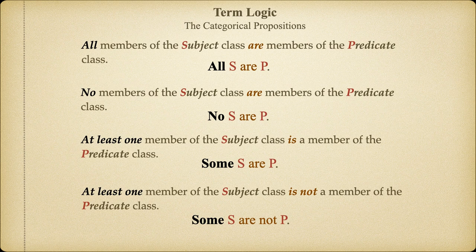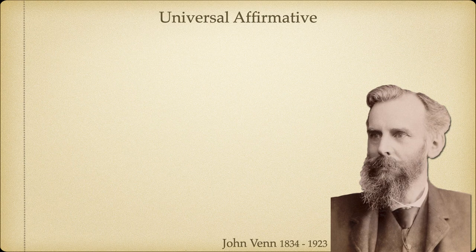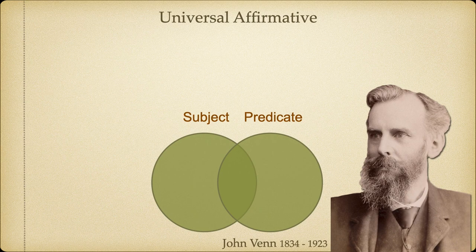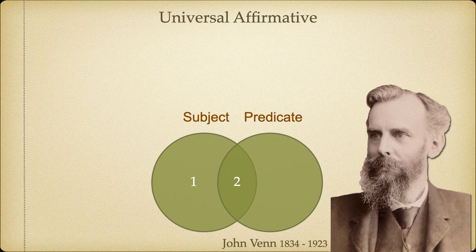In the late 19th century, an English philosopher named John Venn introduced a handy little tool that allows us to visualize the logical relationship that exists between the terms of categorical propositions. We start by taking two circles of the same size and allowing them to overlap just a bit. One circle will represent the subject term, while the other represents the predicate term. Notice that when we overlap the circles, we create three distinct regions or sets. Region 1 represents the set of subjects that are completely and utterly distinct from the predicate class. Region 2 represents the set of both subjects and predicates — that is, it's the region where we have overlap between the two sets. While region 3 represents the predicates that are completely and utterly distinct from the subjects.